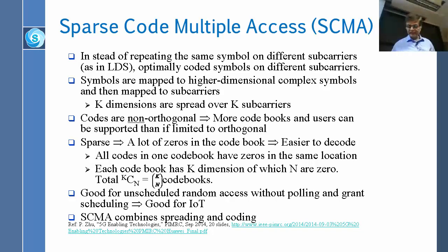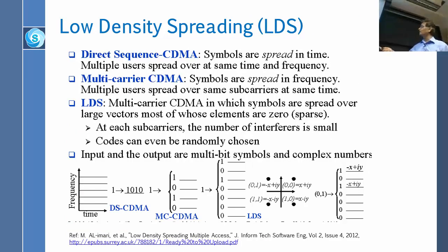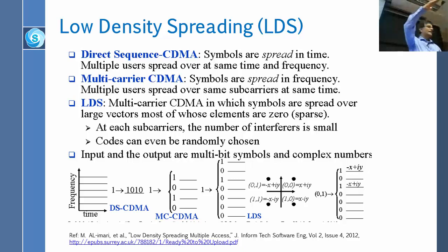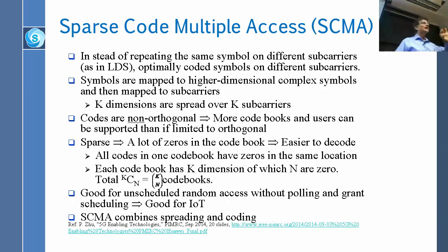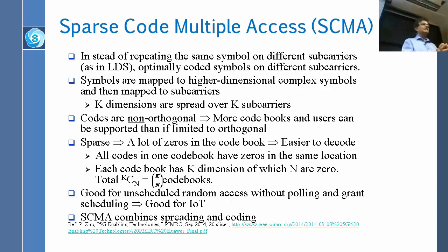Each user with one bit needs only two codebook entries — one and its opposite — but with two bits you need four entries, and with three bits you need eight entries. That becomes a codebook. In SCMA you can have more codebooks, creating more codes. The codebooks have lots of zeros, and all codes within one codebook have zeros in the same row positions. In LDS there is no such rule, but SCMA imposes that rows 15, 17, and 20, for example, must be zero within a given codebook.